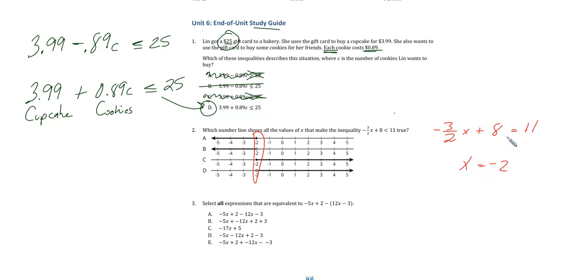So if negative two is what it takes to make X equal 11, the question is here, what kind of X's make it smaller than 11?